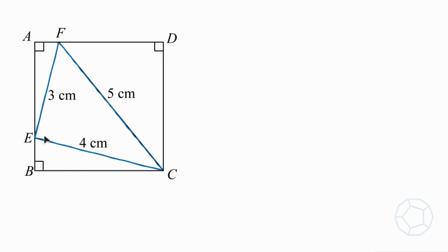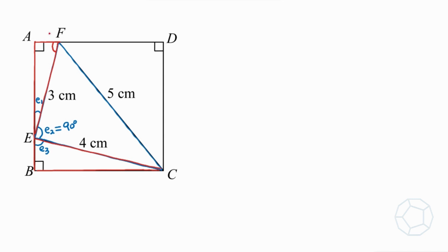First of all, we're going to find the relation of angles in the figure. Let's look at point E and mark the three angles at this point as E1, E2, and E3. Using the given information — 3 cm, 4 cm, and 5 cm — we can prove that angle E2 is actually 90 degrees. Therefore we can express E3 in terms of E1. The two red triangles are AFE and BEC, with angles marked as small letter F and small letter C.